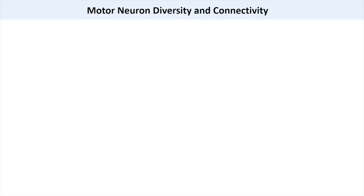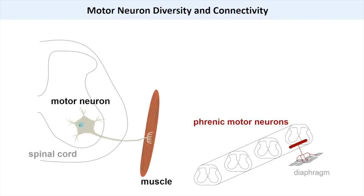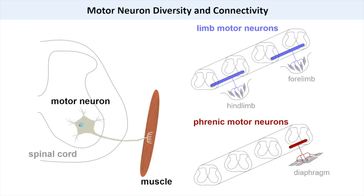The patterns of muscle contraction used during behavior are coordinated by motor neurons located in the brain and spinal cord. Different behaviors require distinct populations of motor neurons. For example, in mammals, breathing requires a dedicated group of motor neurons necessary to contract muscles associated with the lungs. Walking uses motor neurons that are located specifically at limb levels of the spinal cord.